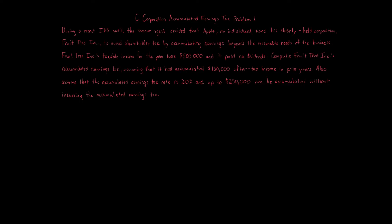Up to $250,000 can be accumulated without incurring the accumulated earnings tax. This is a very important problem when looking at C corporations. Remember that C corporations have two levels of taxation: the first level is at the entity level, and the second level is at the owner level. What some C corporations do to avoid taxes is they do not distribute out money — they try to avoid the owner level tax and make it just one level of tax.